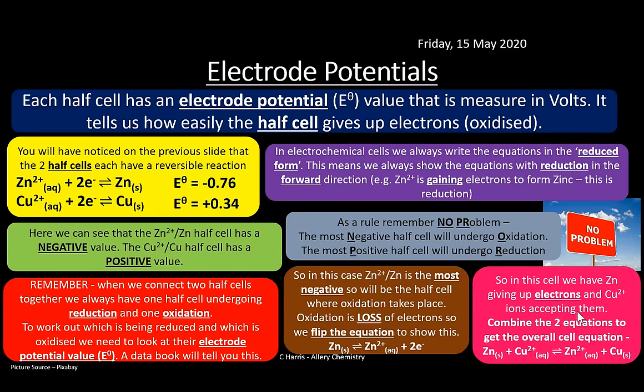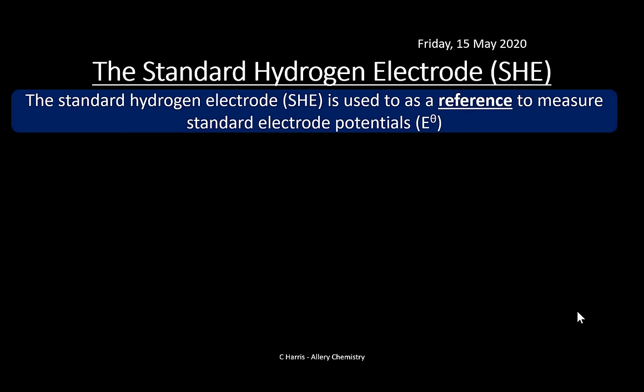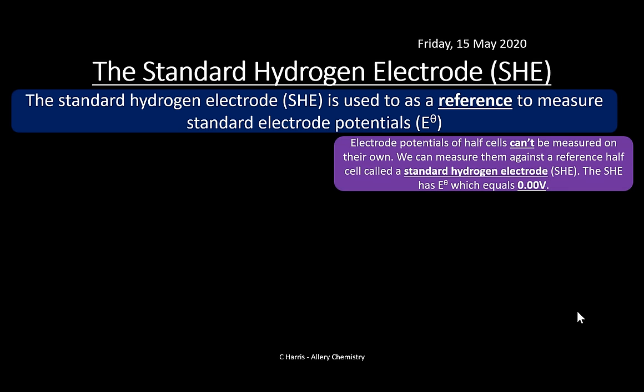These E° values are calculated by connecting each half cell to a Standard Hydrogen Electrode (SHE). Electrode potentials of half cells can't be measured alone — we reference them to the SHE, which has an E° value of zero. This allows scientists globally to compare values under standard conditions, making it a universal language in electrochemistry.